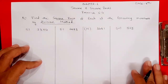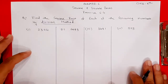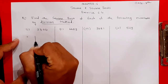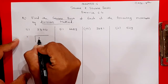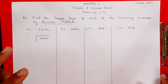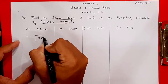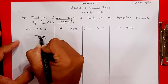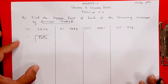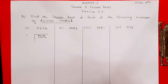Using the division method, you have to find the square root of the given sums. The first question is 2304. Remember students, in the division method, first write the number as it is - 2304. Then you have to make groups of two digits from the end. So from the back, we made a group of two digits, and this is the second group. The first step is to make pairs of two digits from the right side.